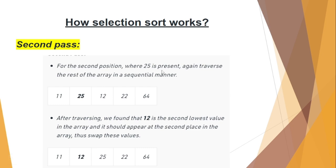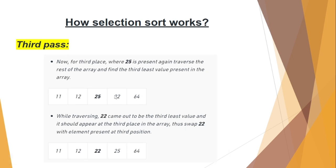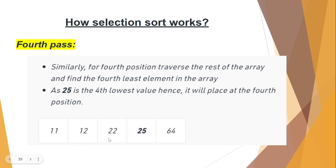For the second position where 25 is present, traverse the rest of the array in a sequential manner. We will check the second position. Now, 25, 22 and 64. So, 22 is small. 22 will come to that position. Now, we will check 25 and 64. 25 is small. 64 will be the biggest element. So, the smallest element in the array goes to the first position.